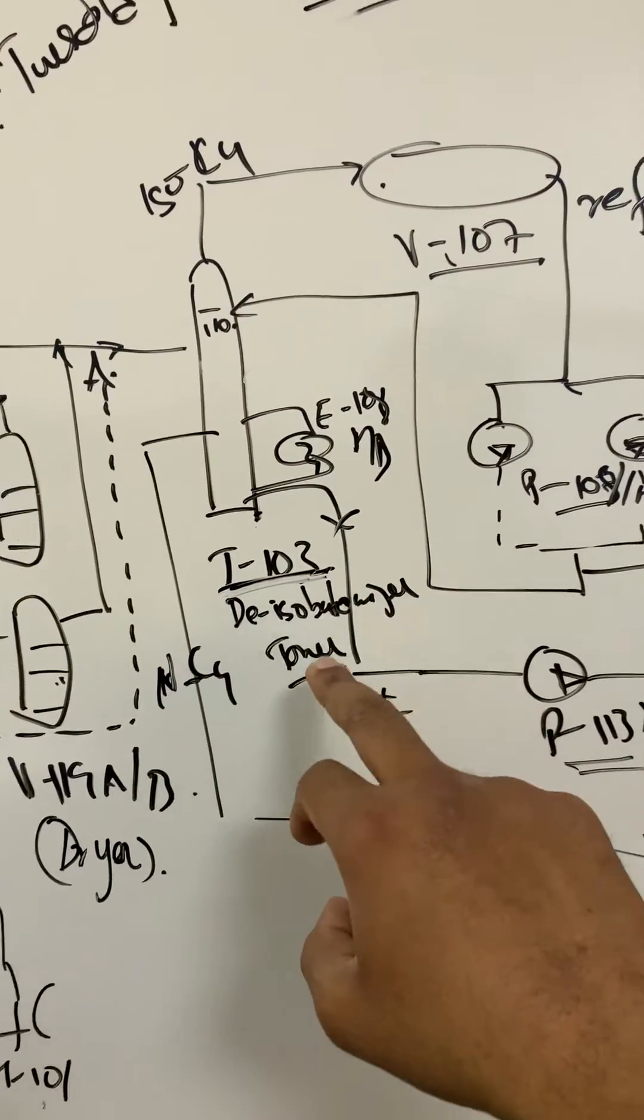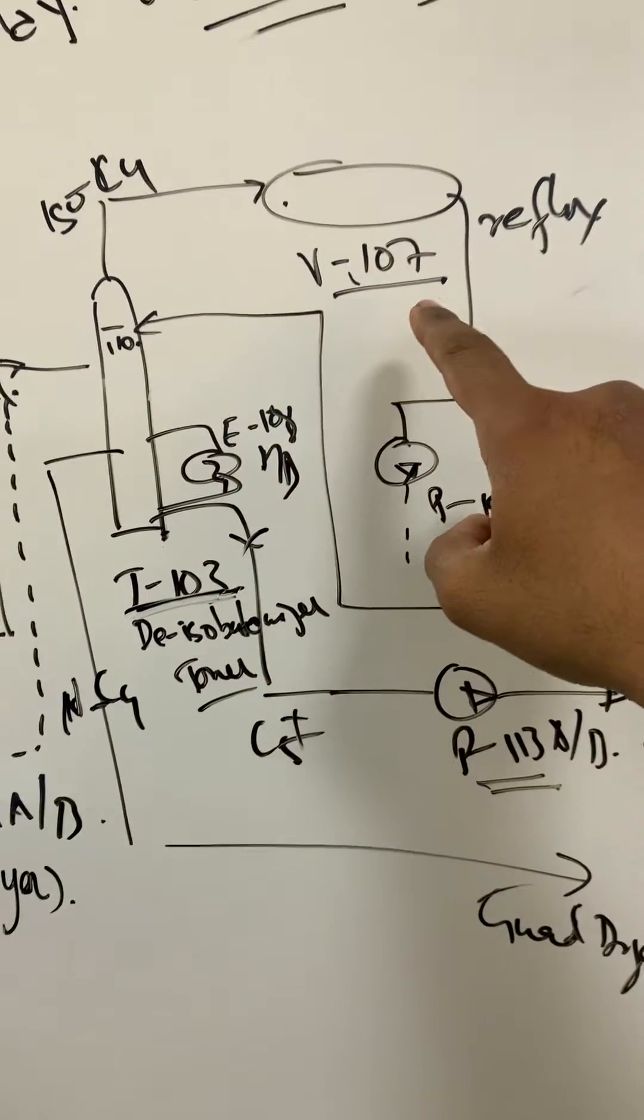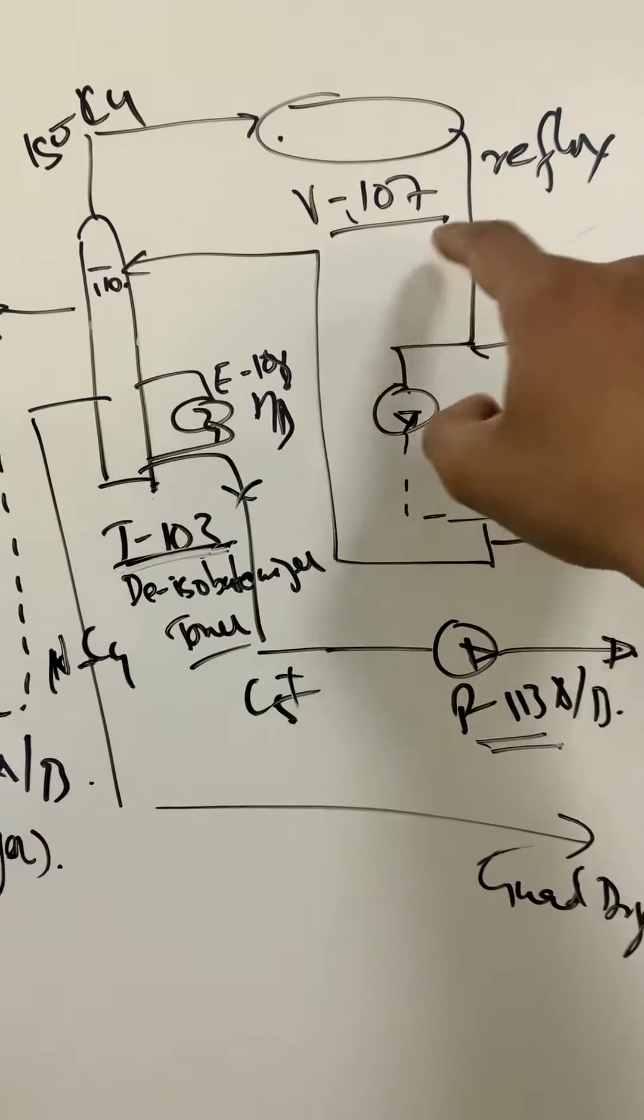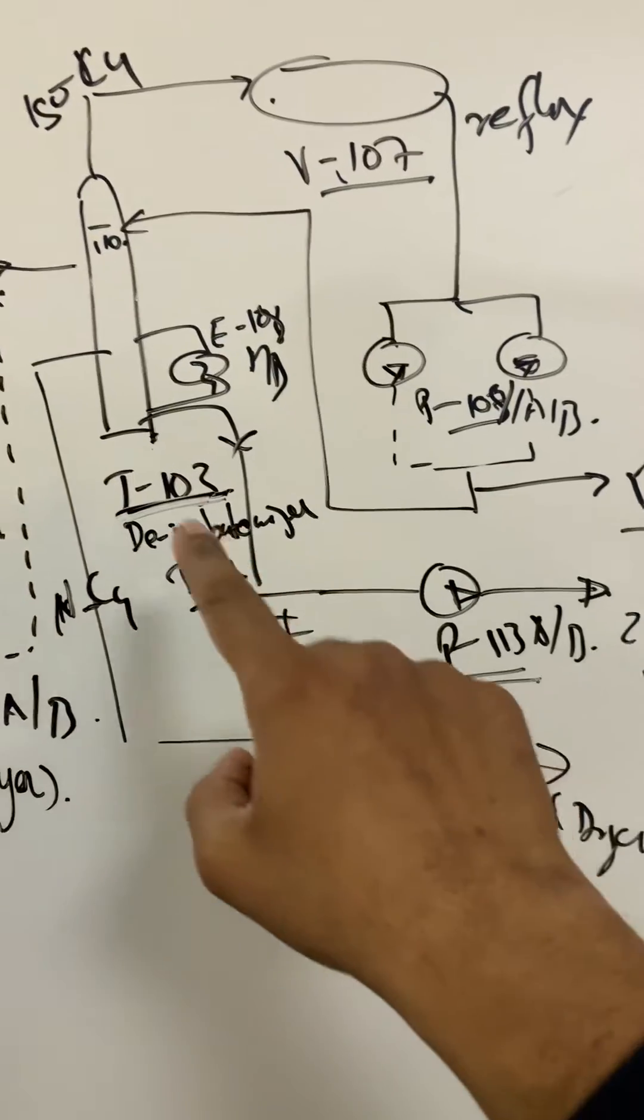We've got the de-isobutanizer tower T103, reboilers E108 A and B, reflux drum V107, pro reflux pumps P108 AB, and then bottom de-butanizer bottom pump P113 AB.